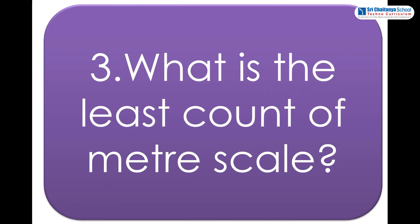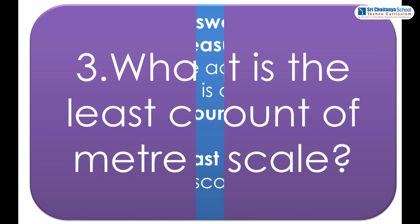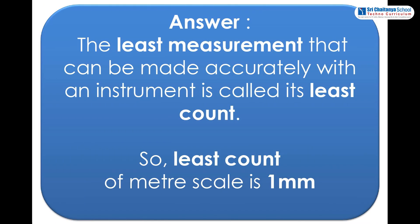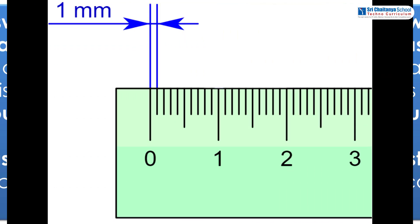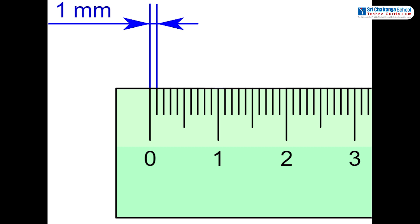And the third question is: What is the least count of a meter scale? Anyone would like to answer this question? The answer is, the least measurement that can be made accurately with an instrument is called its least count. So the least count of a meter scale is one millimeter.